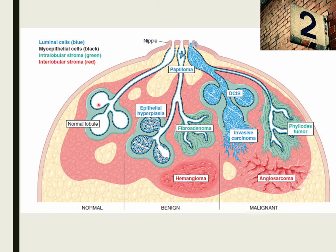The breast has two types of epithelial cells lining the ducts and lobules in the terminal duct lobular unit. These include the luminal cells and the myoepithelial cells, highlighted here in two different colors — luminal cells in blue and myoepithelial cells in black. Every structure, both the large ducts and the terminal duct lobular unit, is lined by these two layers. The luminal cells form the innermost layer of the bilayer ductolobular system, while the myoepithelial layer is the outer layer that rests on the basement membrane.